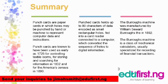At this point, we can summarize what we have learned as follows. Punch cards are paper cards in which holes may be punched by hand or machine to represent computer data and instructions. Punch cards are known to have been used as early as 1725 for controlling textile looms, in 1832 for storing and searching for information, and in 1890 for the American census. Punch cards hold up to 80 characters of data encoded as small rectangular holes, fed into a card reader connected to a computer which converted the sequence of holes to digital information. The Burroughs machine was manufactured by William Seward Burroughs in 1892 and is a class of mechanical calculators usually specialized for recording of financial transactions.